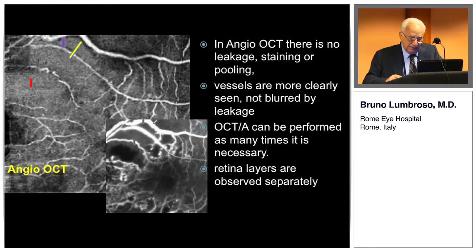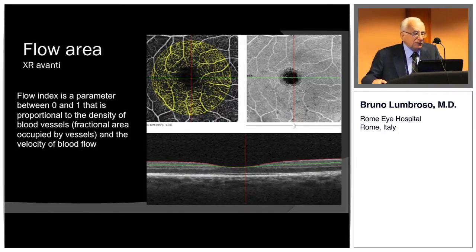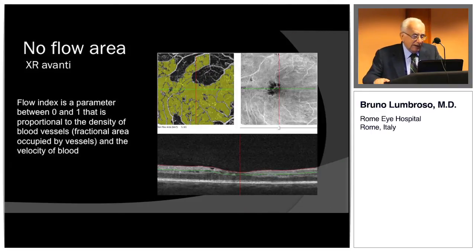We can see each retinal layer separately. Field sizes are 8, 6, and 3 mm with the new AngioView. We can also study the flow area. Flow index is a parameter between 0 and 1, proportional to the density of blood vessels and the velocity of blood flow — very useful in research. No-flow area is also useful in certain diseases.